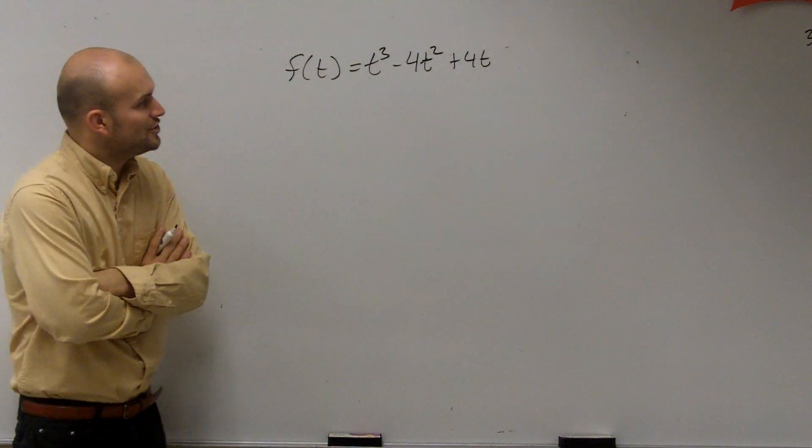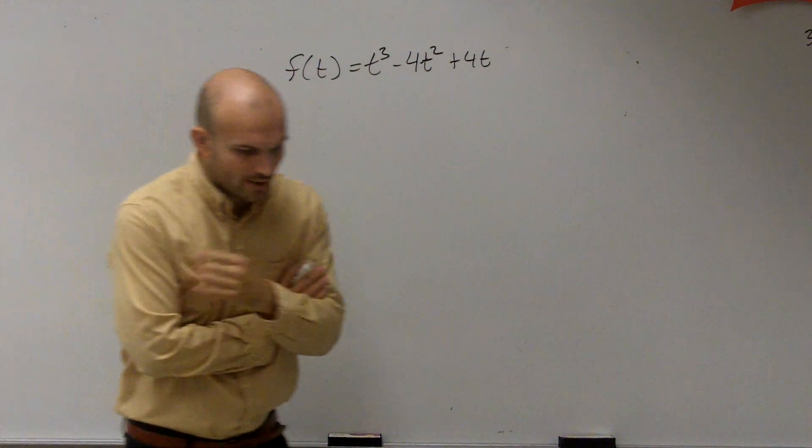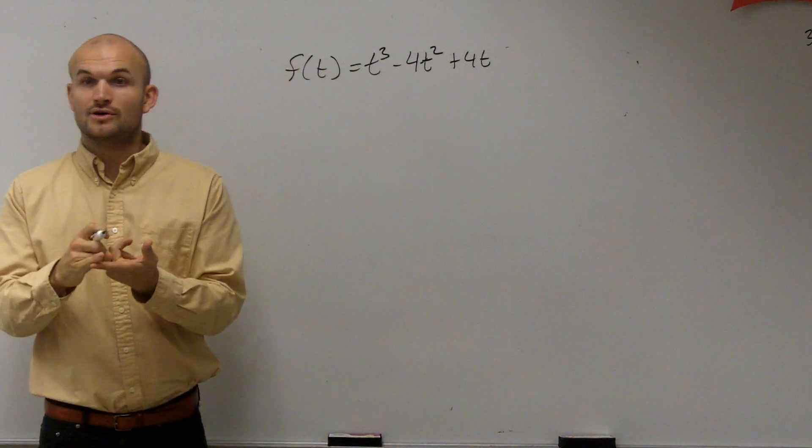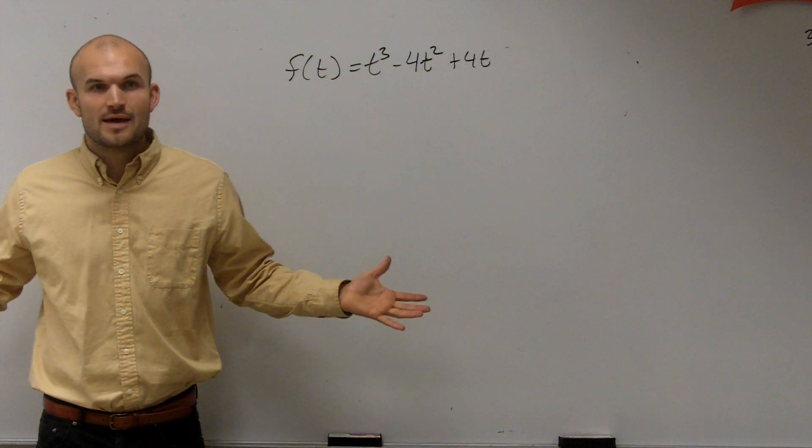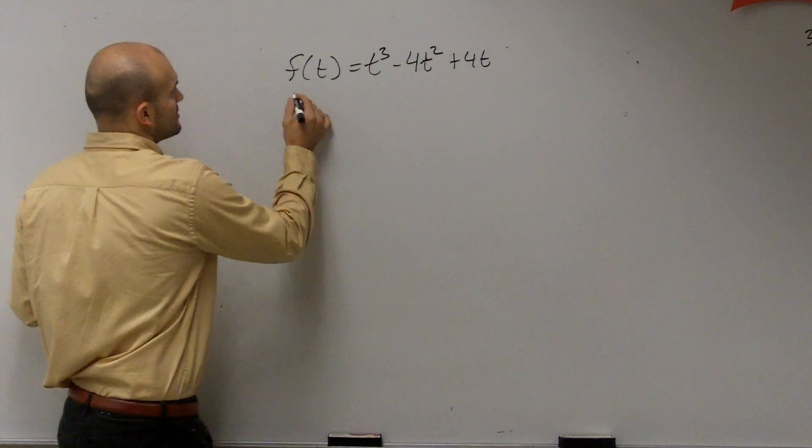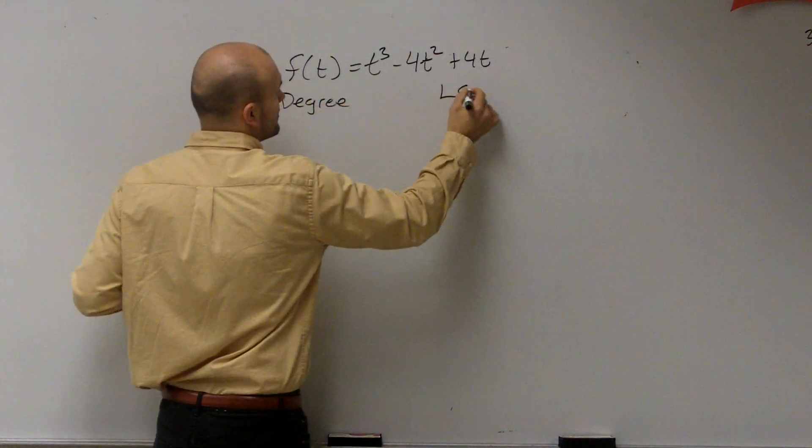So, f of t equals t cubed minus 4t squared plus 4t. Alright? So what we're going to do for this problem is we need to find the zeros, end behavior, and also the multiplicity. First thing, let's get end behavior out of the way. So to determine end behavior, let's find the degree and the LC.